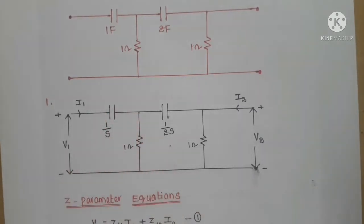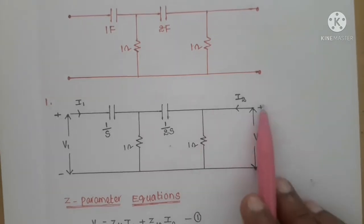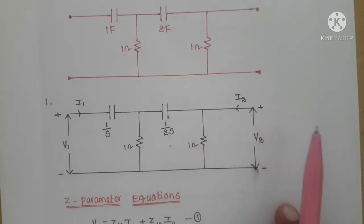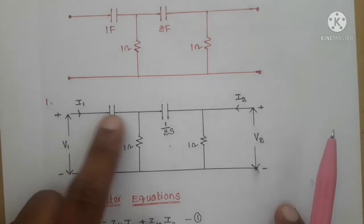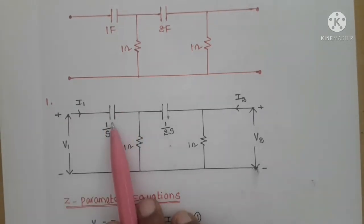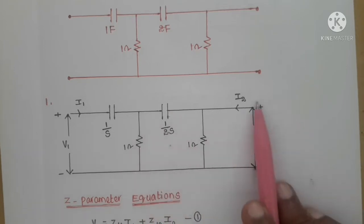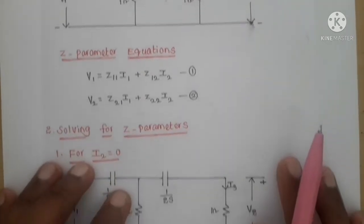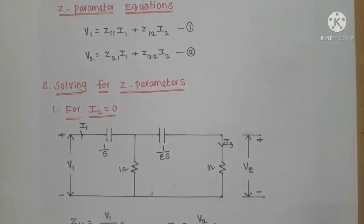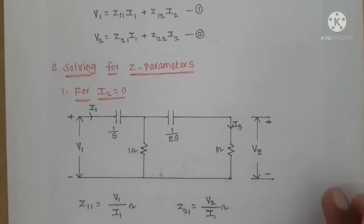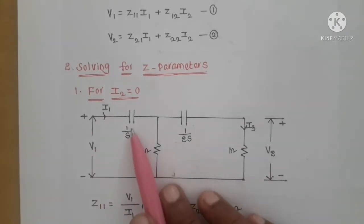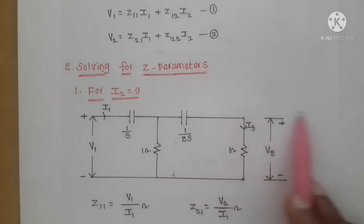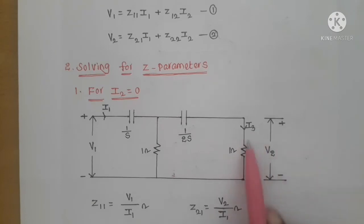When i2 = 0, there is no current in the series capacitor so it can be removed for analysis. The remaining elements — 1/s, 1 ohm, 1/(2s), and 1 ohm — form the simplified circuit. Port 2 has no current but there is a voltage v2, which is the voltage across the one ohm resistor. We apply i2 = 0 to the Z parameter equations to get Z11 = v1/i1 and Z21 = v2/i1.